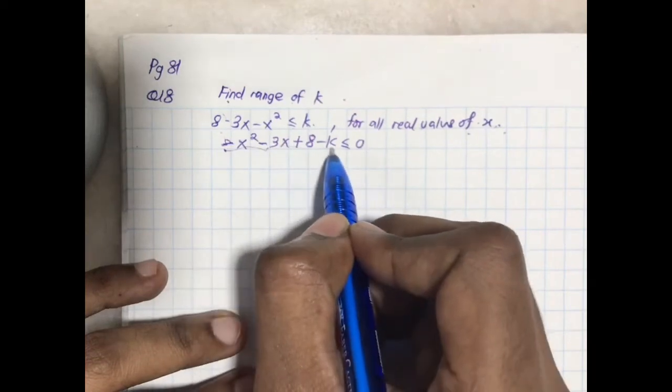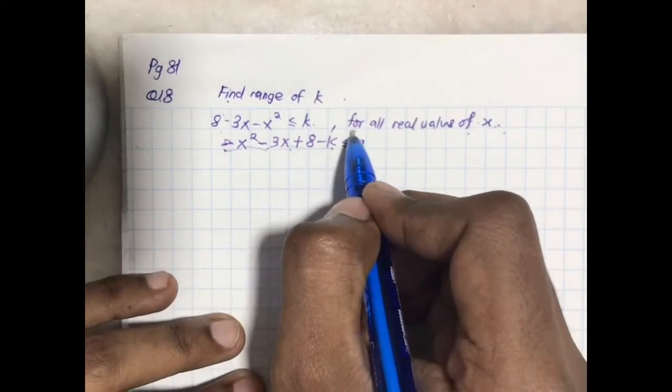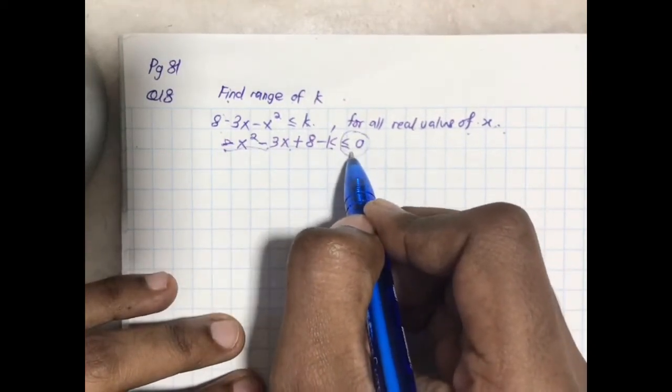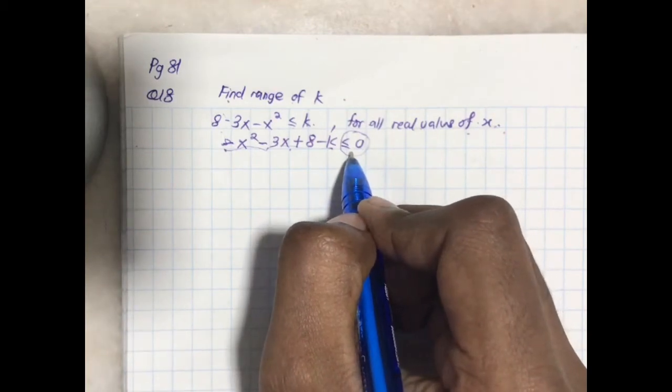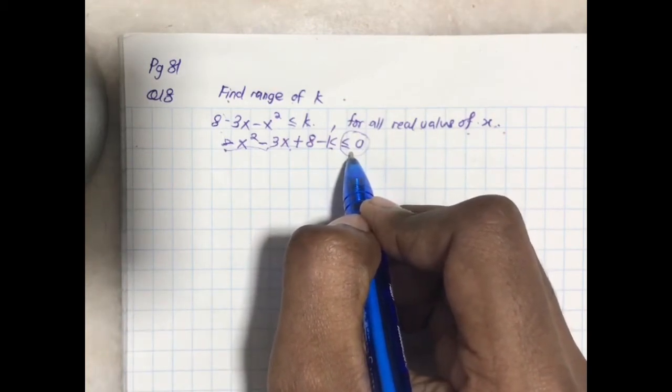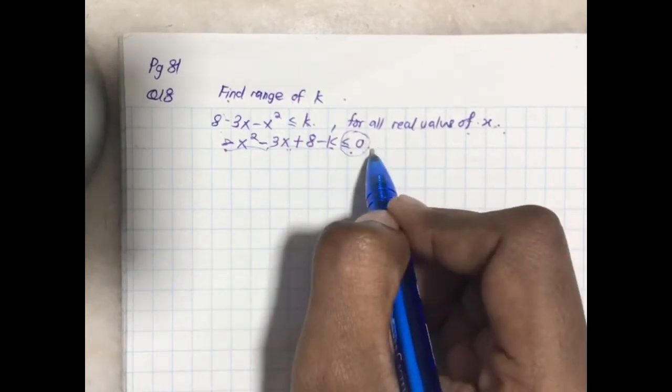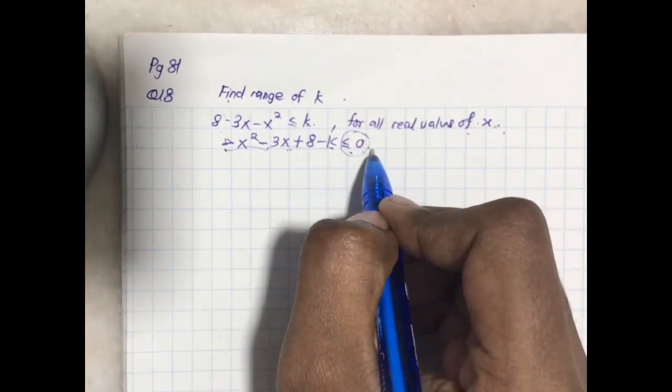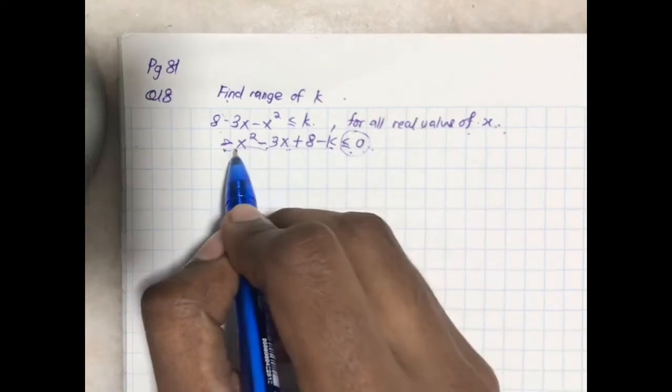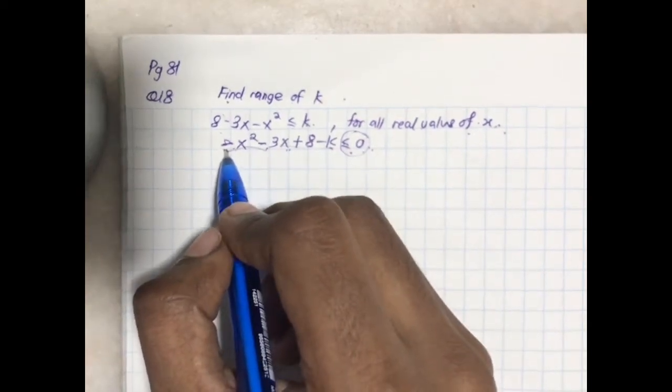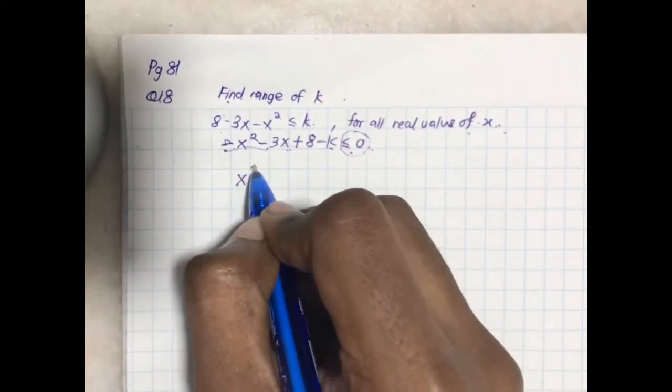This entire quadratic function has to be less or equal to 0. What is less or equal to 0? Negative, right? Less or equal to 0 means negative. I want the function to be a negative function. Not so keen with the negative in front of the x squared. Let me change it into a positive one.